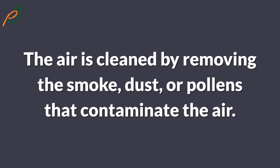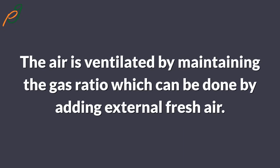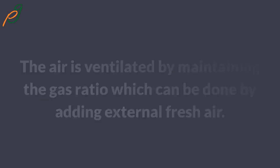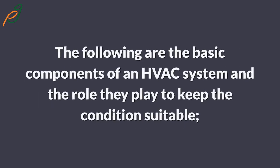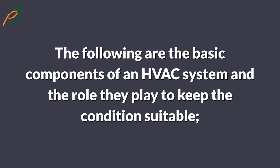The air is ventilated by maintaining the gas ratio, which can be done by adding external fresh air. Lastly, the system controls the air movement supplied in a space, which ensures that those in the place are comfortable. The following are the basic components of an HVAC system and the role they play to keep the conditions suitable.